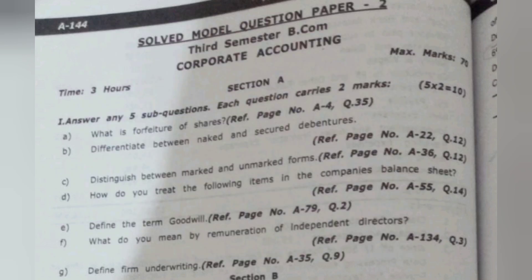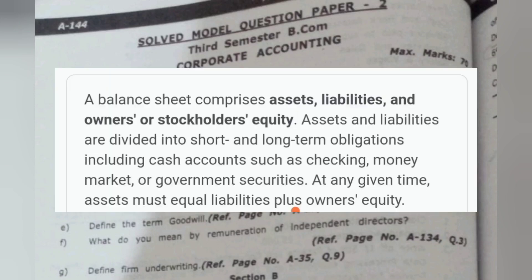How do you treat the following items in the company's balance sheet? The items shown in a company's balance sheet include assets, liabilities, and owner's or stockholder's equity. All kinds of assets — long term and short term — come under the asset side. All types of short-term and long-term liabilities, along with the owner's equity, come under the liabilities and equity side.